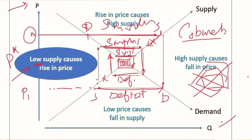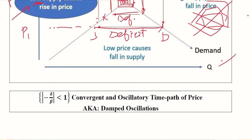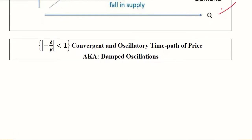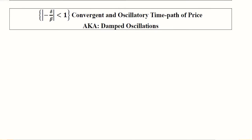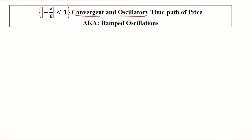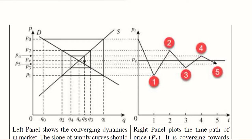Now we will consider the two main cases within this framework. The first possibility is convergent and oscillatory; the other is divergent and oscillatory. Only oscillatory cases are possible because the actual value of b is always negative. For convergence, the absolute value of small b is less than one. Let us look at the diagram for this case.